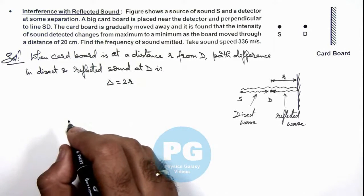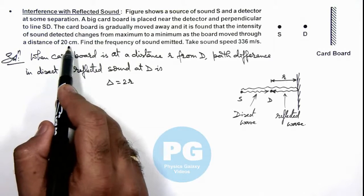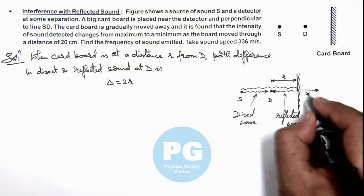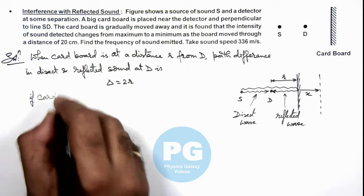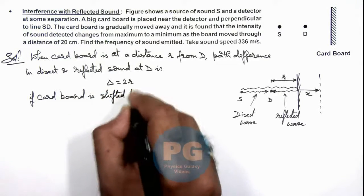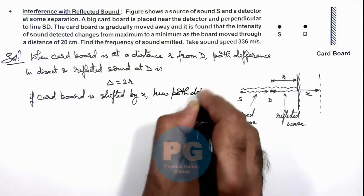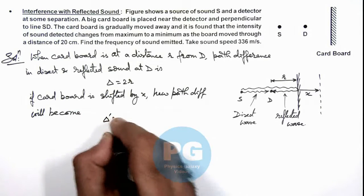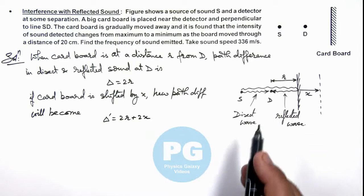Now we are given that the cardboard is displaced by some distance, that is 20 centimeters, then the sound detected changes from maximum to a minimum. So if this cardboard is shifted away by a distance x, we can write if cardboard is shifted by x, a new path difference will become this delta dash which is 2r plus 2x. And we are given that sound is changing from maximum to minimum.